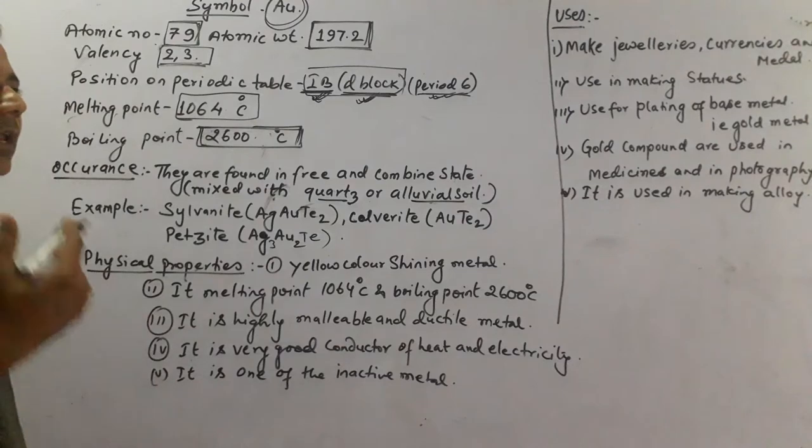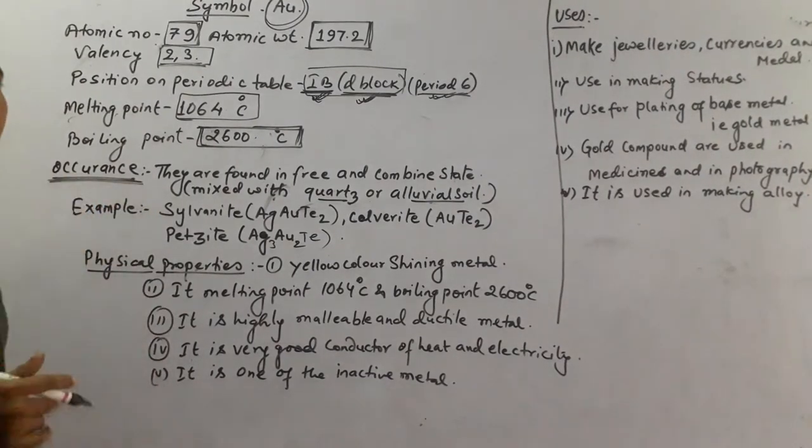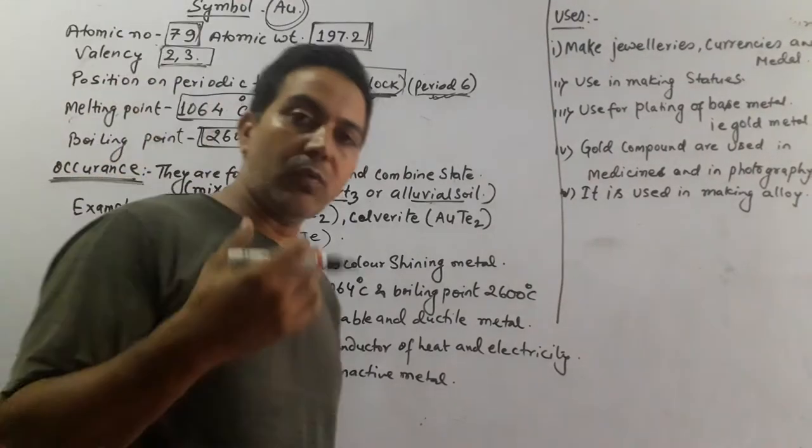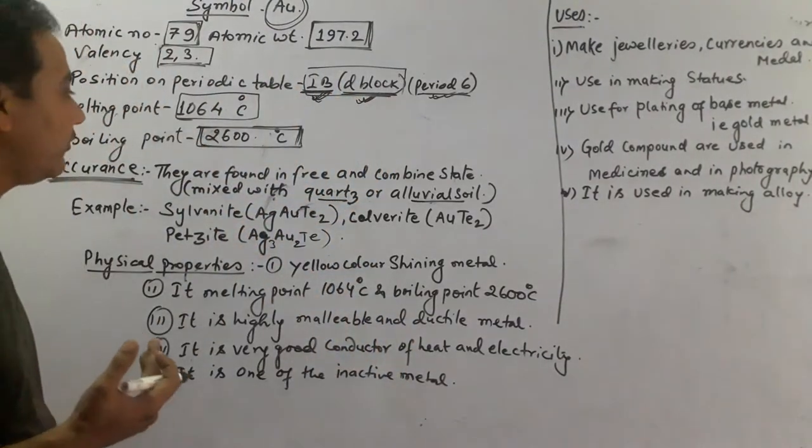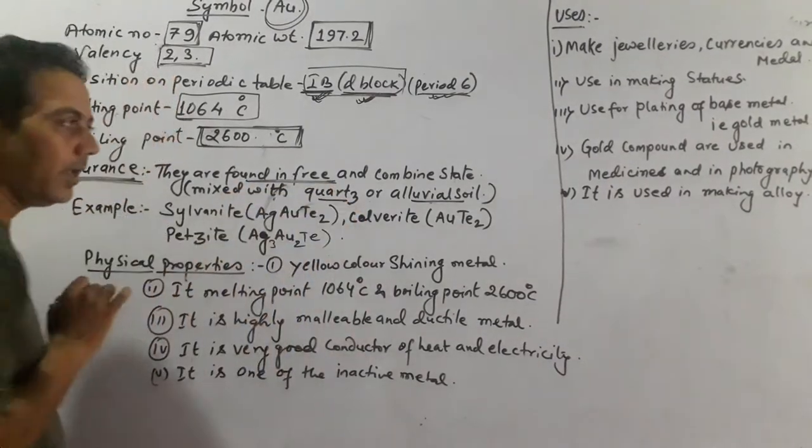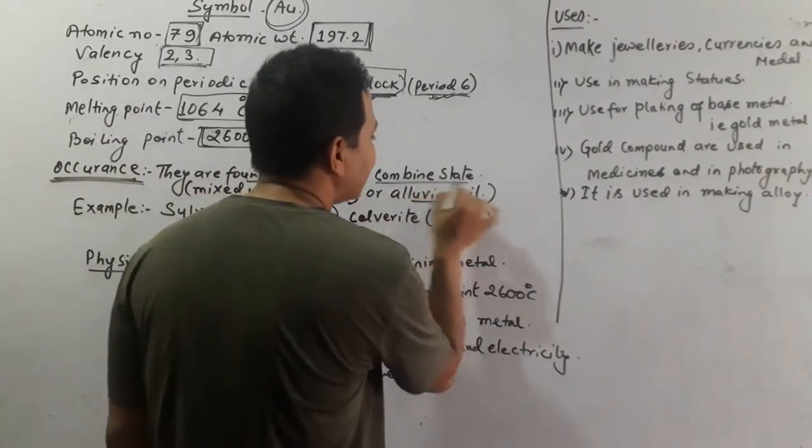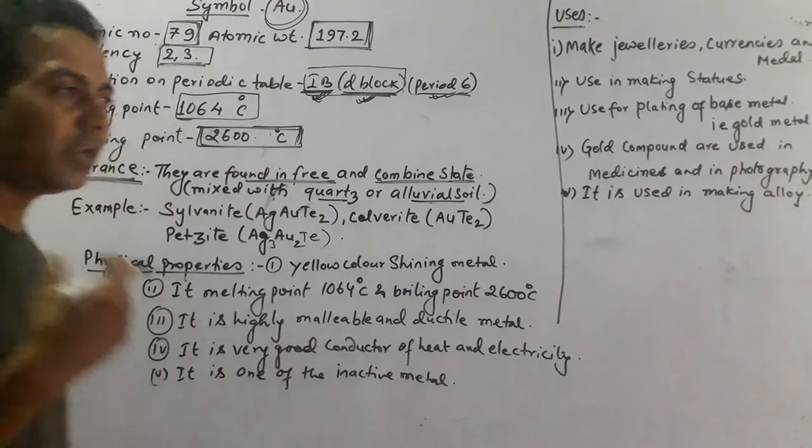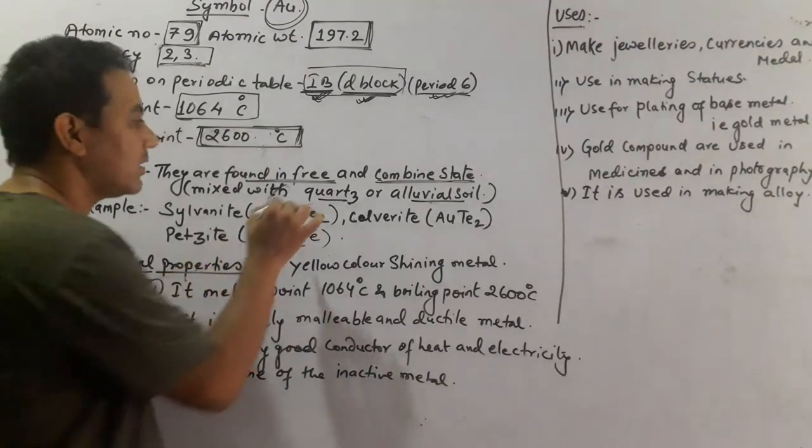In earth's crust, where has it been found? Gold is found in the free stage, meaning it does not contact with other minerals and lies freely. And also it remains in combined stage, meaning it mixes with other minerals.